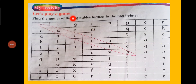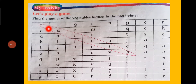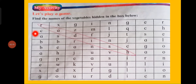Let's play a game, children. Find the names of the vegetables hidden in the box below. The first one is already done — Radish. Now let's find another. You can see here — Cabbage.